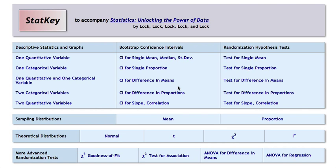In this tutorial, I'll talk about how to run a test for a difference in proportions using the randomization method in StatKey.